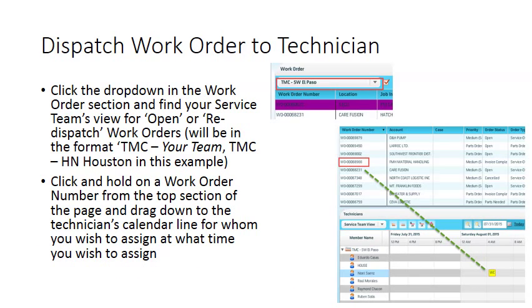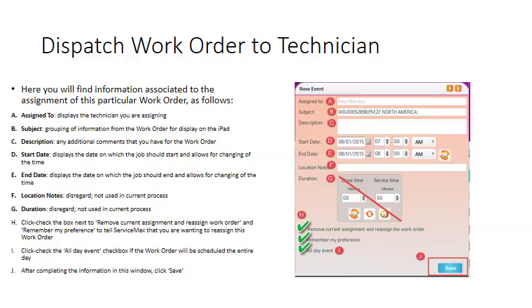To assign a work order to a specific technician, click the drop-down in the Work Order section and find your specific team's view for open or redispatch work orders. Then click and hold a work order number from the top section of the page and drag it down to the technician's calendar line for whom you wish to assign and at what time. When you release the click and hold, ServiceMax will assign the work order and open the new event pop-up window.